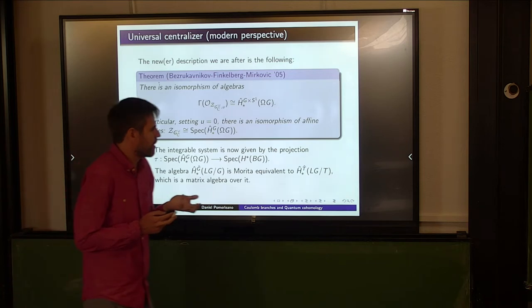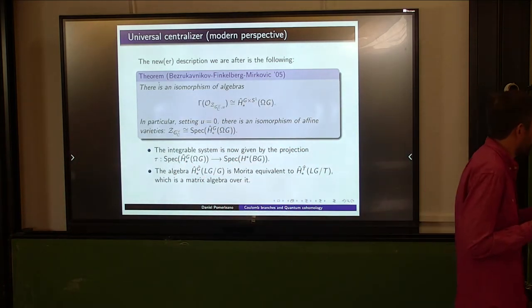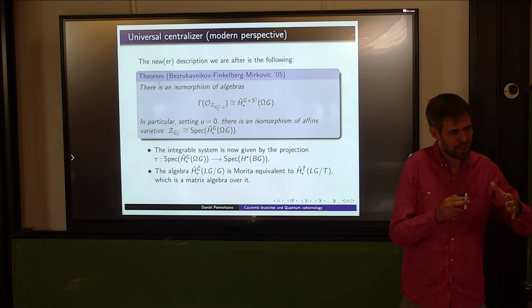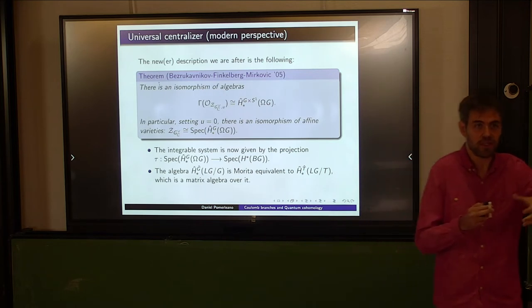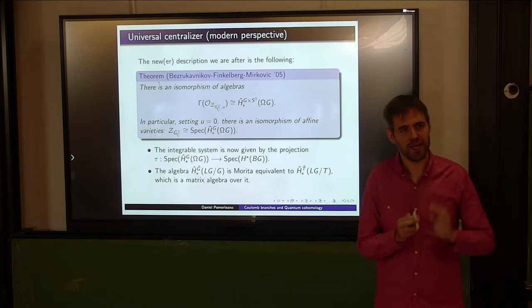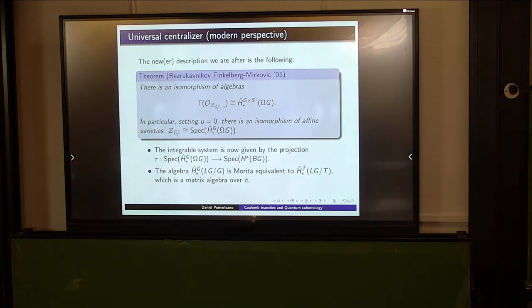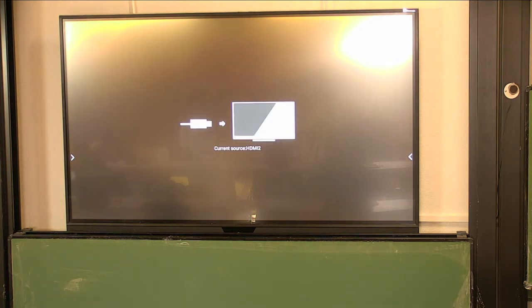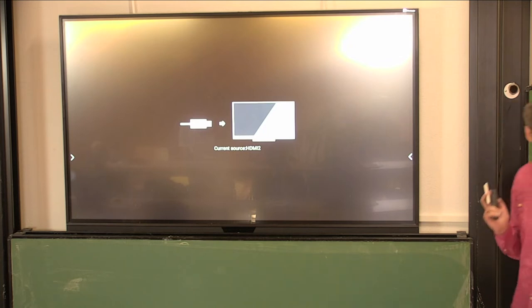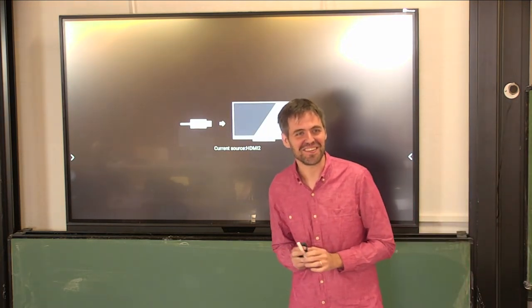There's a discussion about whether with no matter this reduces to ordinary homology. The equivariant homology has a torsion module structure over H*(BG), whereas this version is free of rank one over H*(BG). There's some definitional disagreement between representation theory and topology — it's cohomology in the BG direction and Borel-Moore homology in the fiber direction.